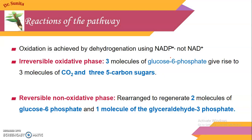There are two phases of the pentose phosphate pathway, also called the hexose monophosphate pathway. The first is the irreversible oxidative phase, and the second is the reversible non-oxidative phase.